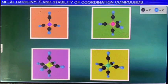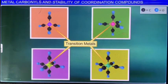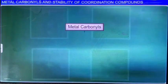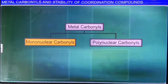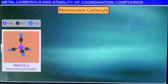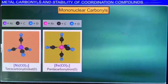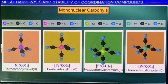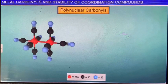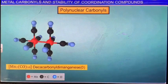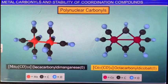Carbonyls are coordination compounds of transition metals with carbon monoxide. Depending on the number of metal atoms, carbonyls are divided into two types: mononuclear carbonyls, containing one metal atom per molecule, and polynuclear carbonyls. Examples of mononuclear carbonyls include tetracarbonylnickel(0), pentacarbonyliron(0), hexacarbonylchromium(0), and hexacarbonyltungsten(0). Polynuclear carbonyls contain two or more metal atoms per molecule; examples include decacarbonyldimanganese(0), octacarbonyldicobalt(0), octacarbonyldiruthenium(0), and decacarbonyldirhenium(0).